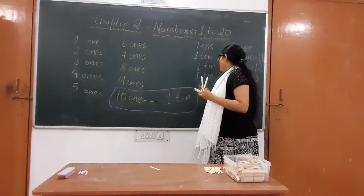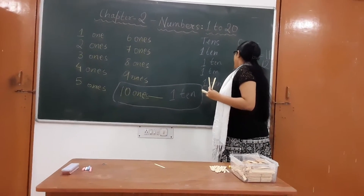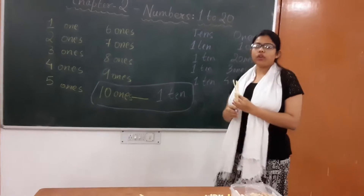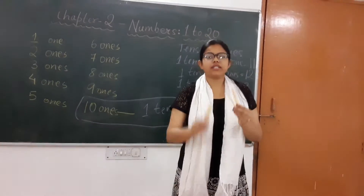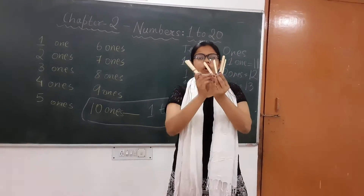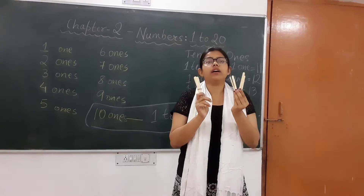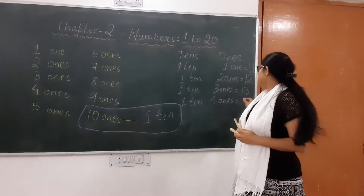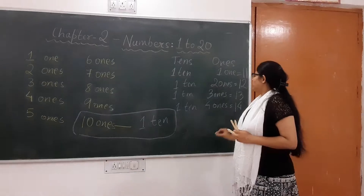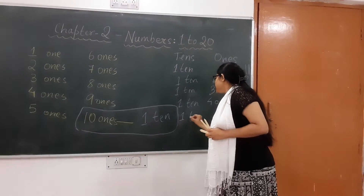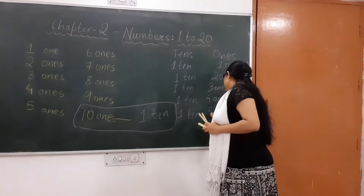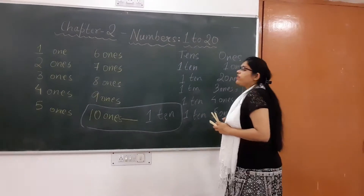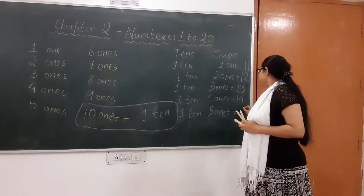And 1-ten and 4-ones — see, 1-ten and 4-ones makes which number? Makes 14. And 1-ten and 5-ones makes which number? 15.